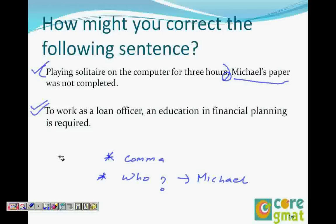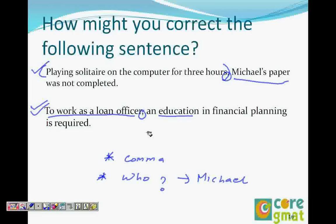The second sentence: to work as a loan officer, an education and financial planning is required. We make a lot of these errors in spoken English. The comma is there, so you ask yourself: who has to work as a loan officer? It cannot be the education and financial planning — somebody has to work as a loan officer. So the corrected sentence would be: to work as a loan officer, one should have an education and financial planning. Or: one needs education and financial planning. You have five answer choices and any of the four correct answer choices is your answer.